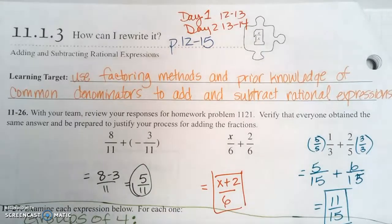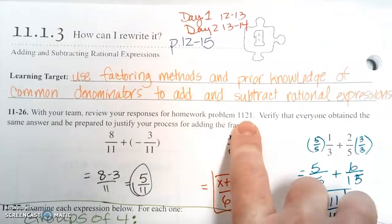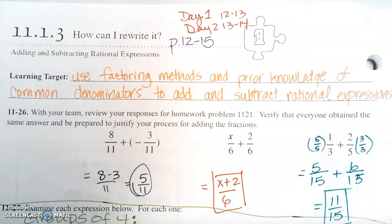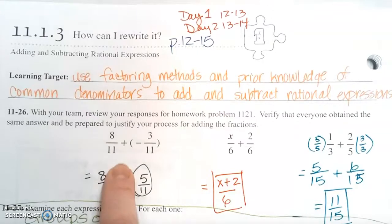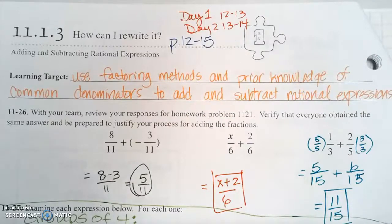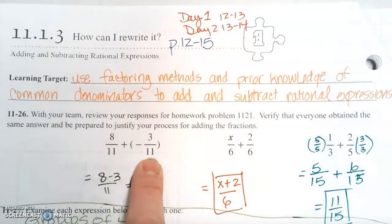Question 26 says review your homework problem from 1121. Verify that everyone attains the same answer. You can do that in a minute and be prepared to justify the process for adding fractions. They start super easy with just numbers.